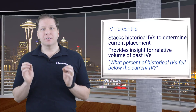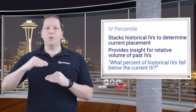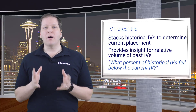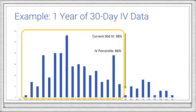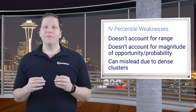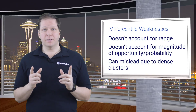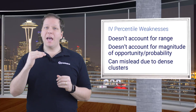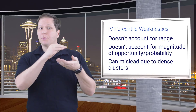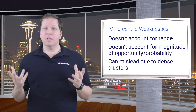The next metric we'll look at is IV percentile. This metric stack ranks all the historical observations to determine which percentile the current value fits in at. It answers the question: what percent of historical volatilities fell below the current volatility? In this example, we can determine that 86% of past readings were below the current reading, resulting in an IV percentile of 86. This can be very useful in determining that a mean reverting volatility is likely to return to the range where the vast majority of past readings occurred. However, IV percentile does have its own weaknesses — it doesn't account for range, so it can be skewed by clusters of historical data. For example, an IV percentile of 50 may have half its readings at 5% below the current reading and the other half at 1% above. As a result, the drop opportunity would be bigger than its 50 implies.